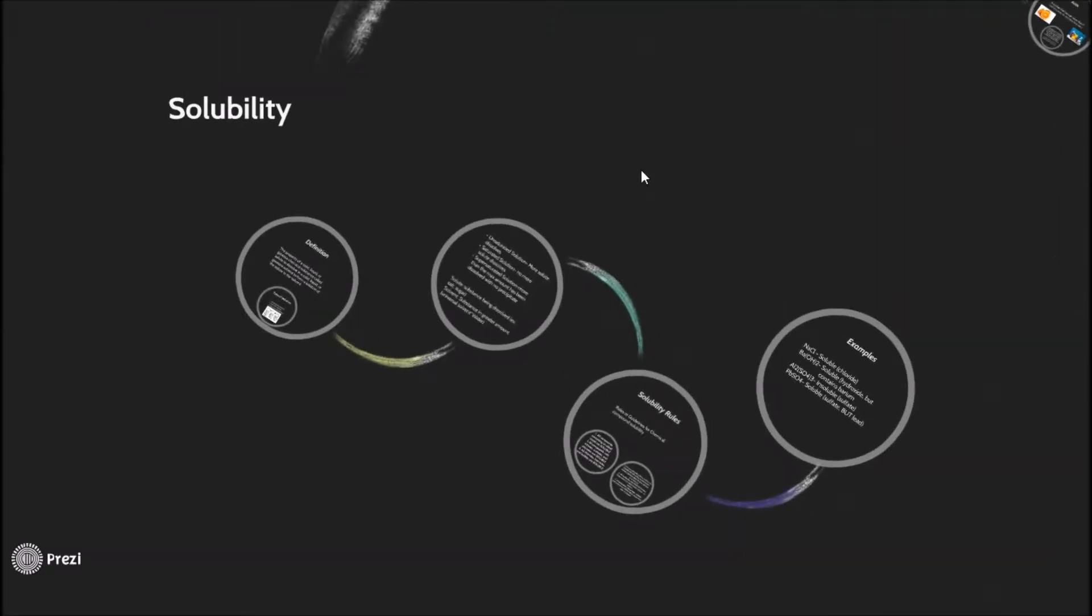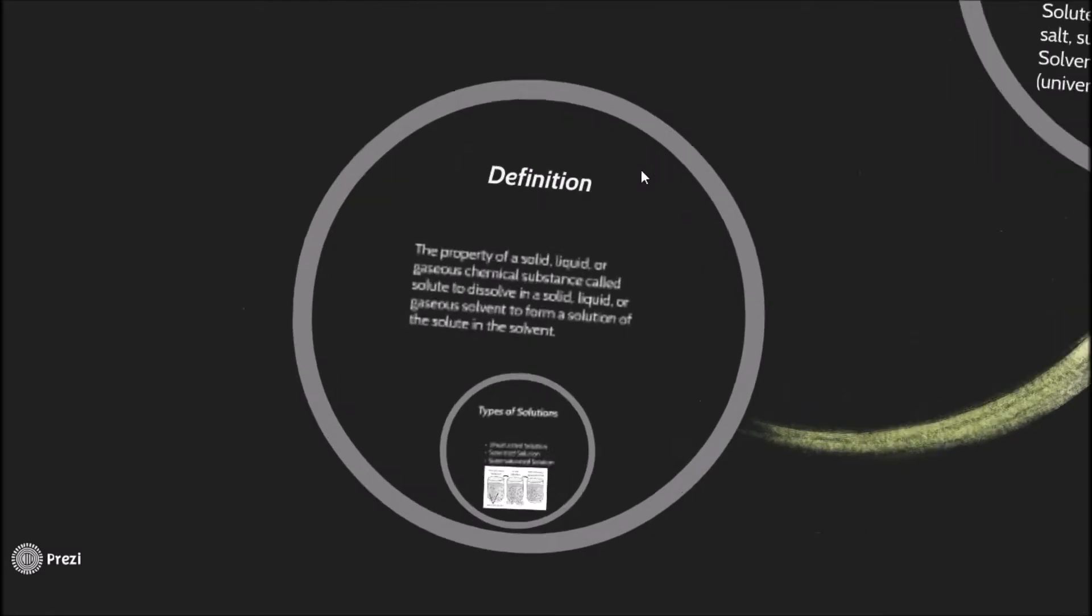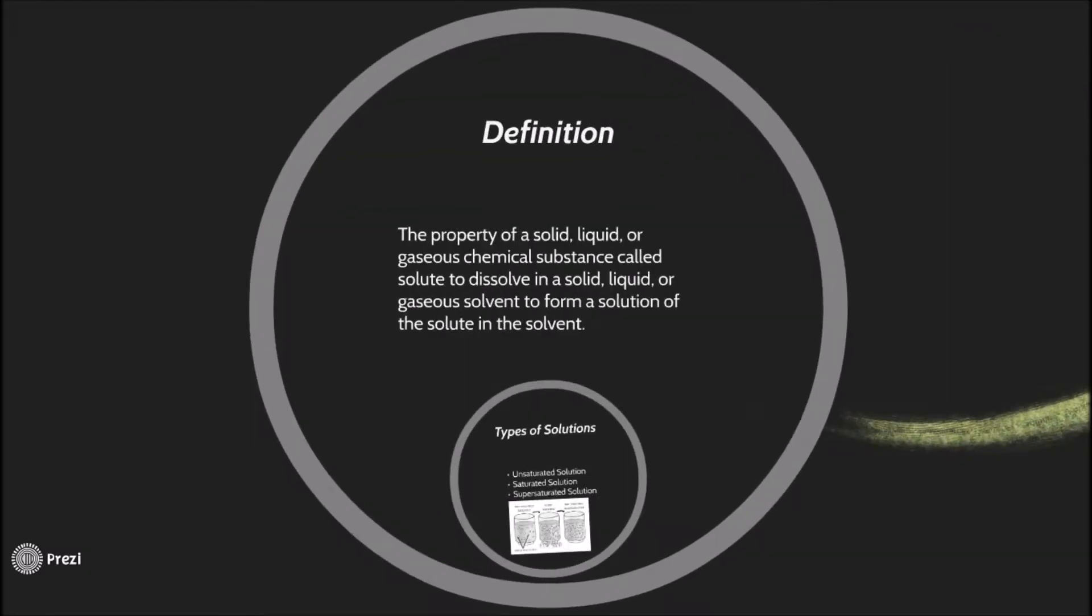The first part we're learning about is solubility. The definition of solubility is the property of a solid, liquid, or gaseous chemical substance called solute to dissolve in a solid, liquid, or gaseous solvent to form a solution of the solute and the solvent.